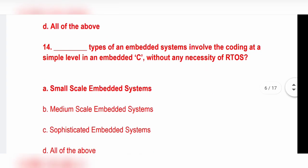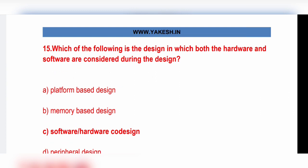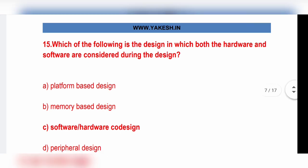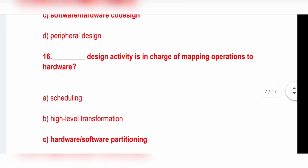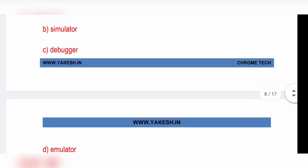Next question: Small-scale type of embedded system involves the coding at the simple level in embedded C without any necessity of RTOS. Option A, small-scale embedded system is the correct answer. Which of the following is the design in which both hardware and software are considered during design? Option C, software hardware co-design. Hardware software partitioning design activities charge of mapping operation to hardware. Which of the following helps in reducing the energy consumption of the embedded system? Option A, compiler is the correct answer.